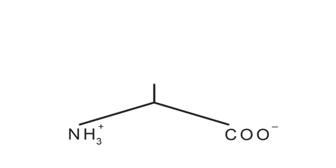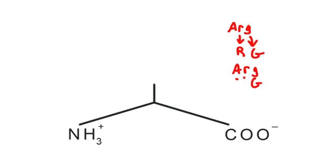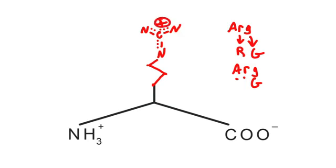Next up is arginine. I always start with its three-letter abbreviation, ARG. The R reminds me that R is its single-letter amino acid abbreviation, and G reminds me that it has the guanidinium group in it. Also, there are two letters before the G for guanidinium, so there will be two carbons before the guanidinium group. Starting from the alanine backbone with the beta carbon already in place, we have two carbons and then the guanidinium group. Connect the dots, put in the positive charge, and you have arginine.